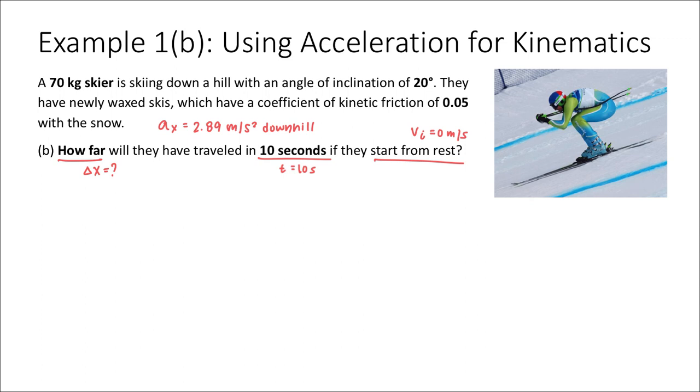What I can do is I can look at my kinematic equations and choose one that has delta x in it and allows me to solve using the acceleration, the initial velocity, and the time. I think I'll use this equation. Delta x equals the initial velocity multiplied by the time plus one-half the acceleration multiplied by time squared. Because I already know all of my terms, I can go ahead and plug in values. This is going to be 0 because they initially were at rest. That'll be equal to one-half 2.89, and then the time was 10 squared, which would be equal to one-half times 2.89 times 100, which will give me a value of 144.5 meters.